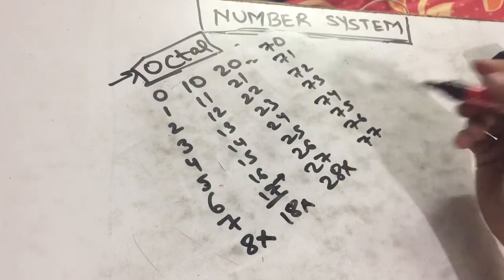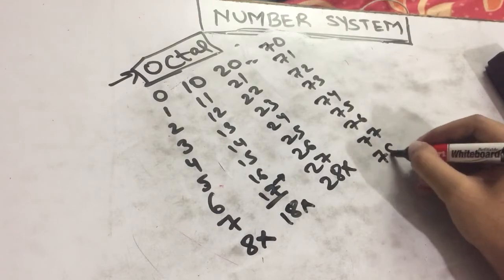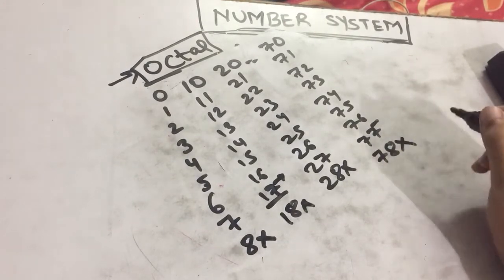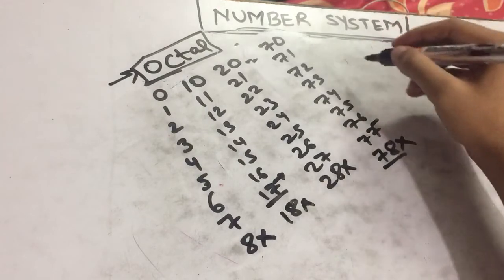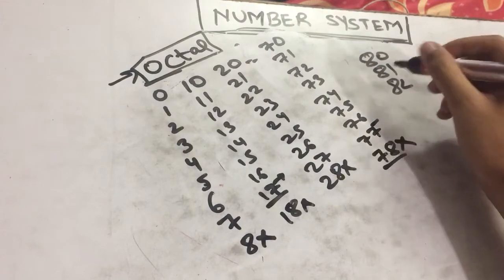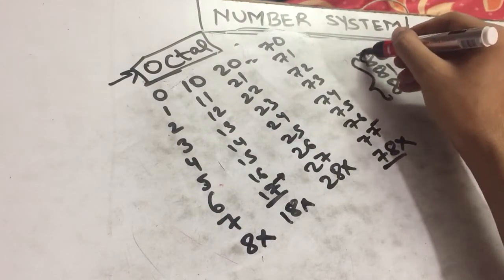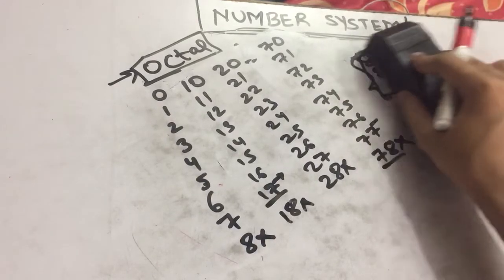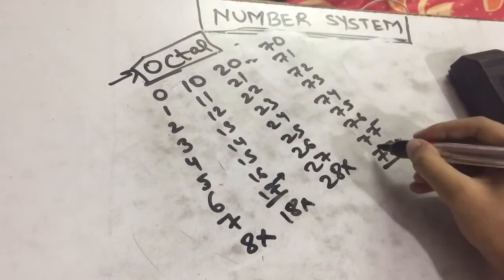77. Again we can't write 78 because 7 is the maximum value which we can use. We can't write 78, neither can we write 80, 81, 82 because we don't take the value of 8. So what will be the next number after 77?